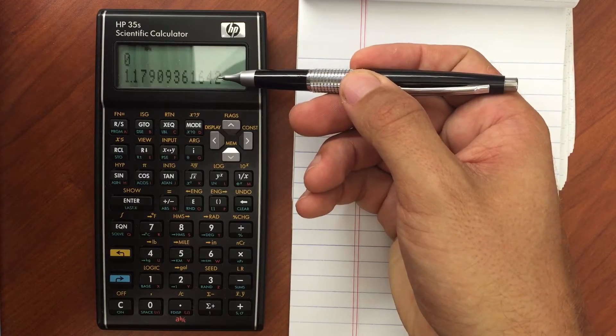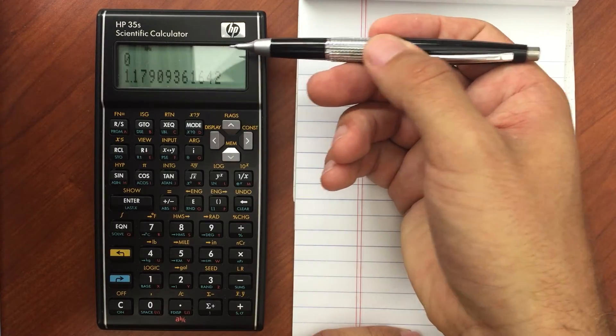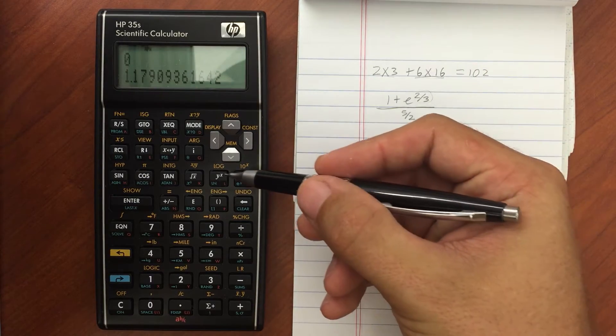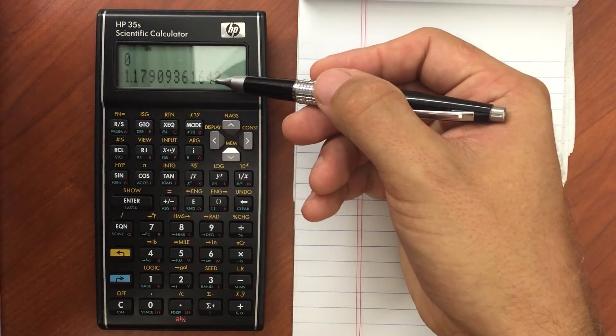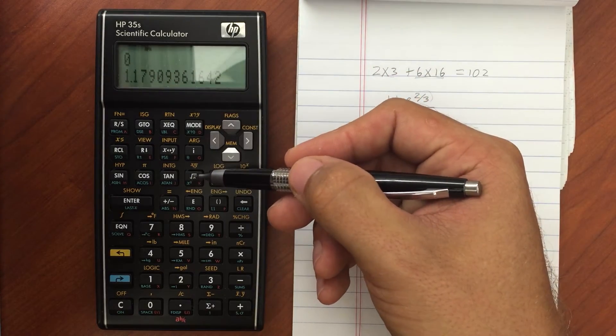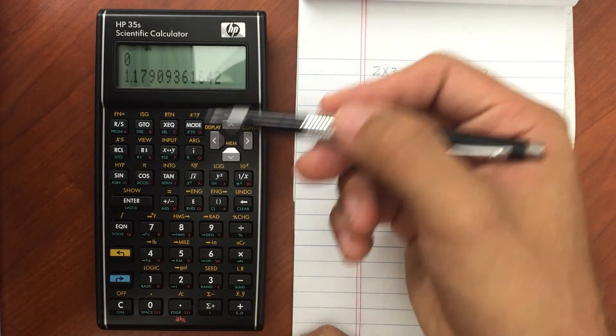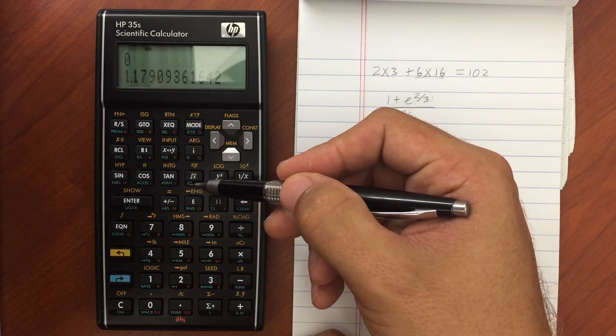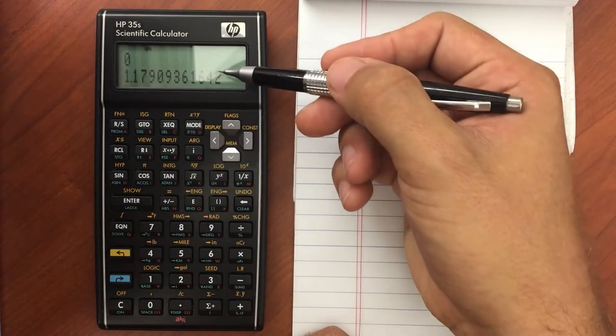Remember, this is the x register. And this is the y register. So all of these functions here, like the square root of x, refer to the x register. So that would take the square root of what's in the x register. The blue x squared would take the square of what's in the x register.